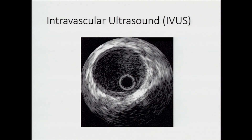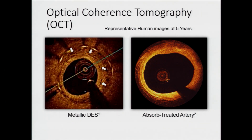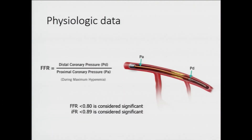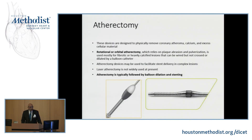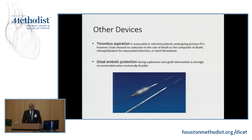To optimize our procedures we have a variety of tools. IVUS allows us to see inside the atheroma and calcification, and to visualize previously placed stents. We also use optical coherence tomography, or OCT, which has very high resolution — even better than IVUS. You can see metallic stents and scar tissue inside them on the left, and on the right a bioabsorbable stent with no metal visible, just a beautiful clear lumen. FFR is also increasingly used: an FFR value less than 0.8 is considered very significant, as is an iFR less than 0.89, providing physiological data in addition to anatomical data. Atherectomy burrs are used for calcified lesions, along with thrombus aspiration and embolic protection devices.